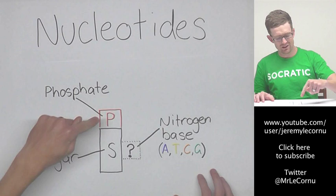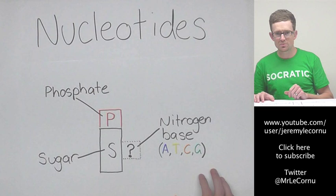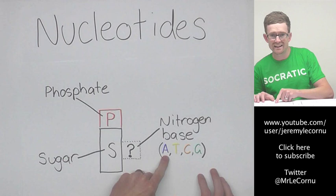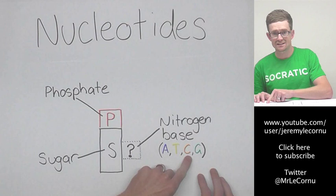But the nitrogen base can be one of four types of base. It can be either adenine (A), thymine (T), cytosine (C), or guanine (G).